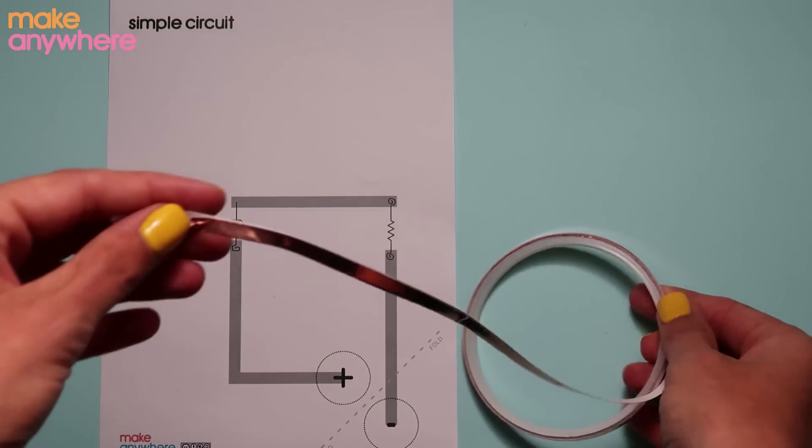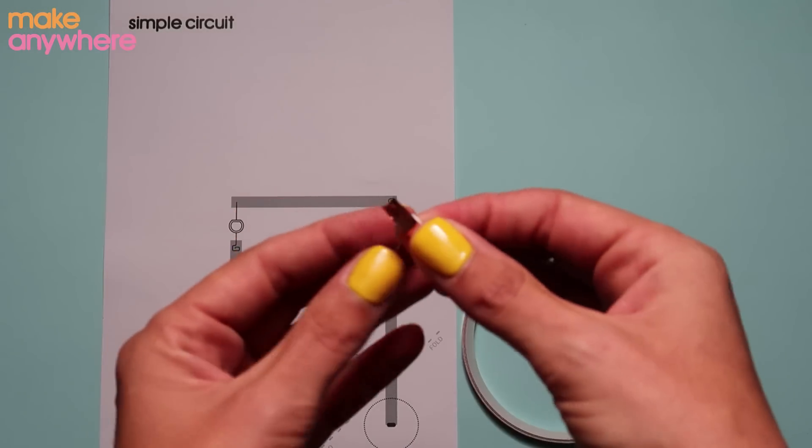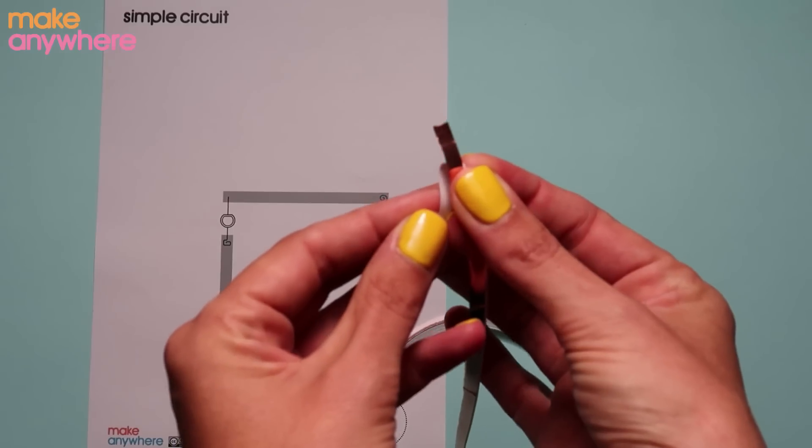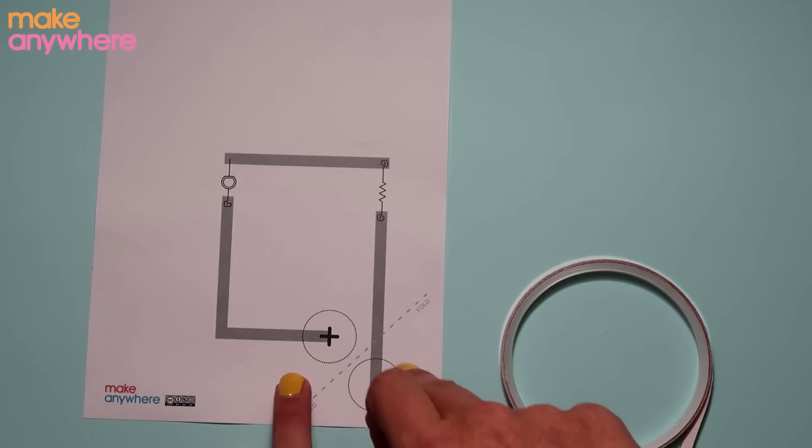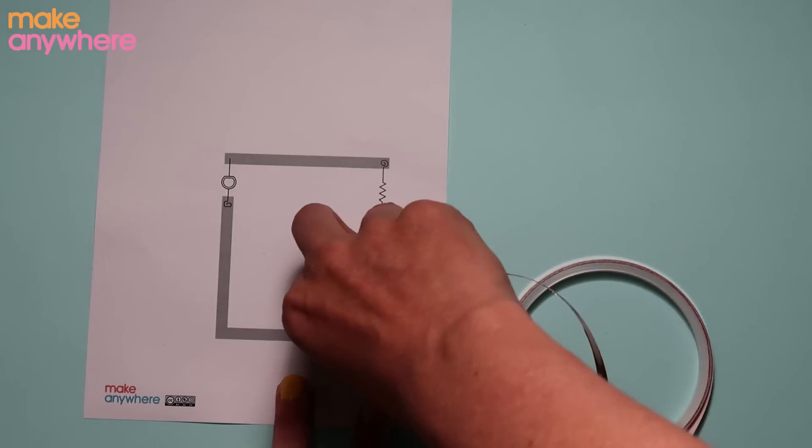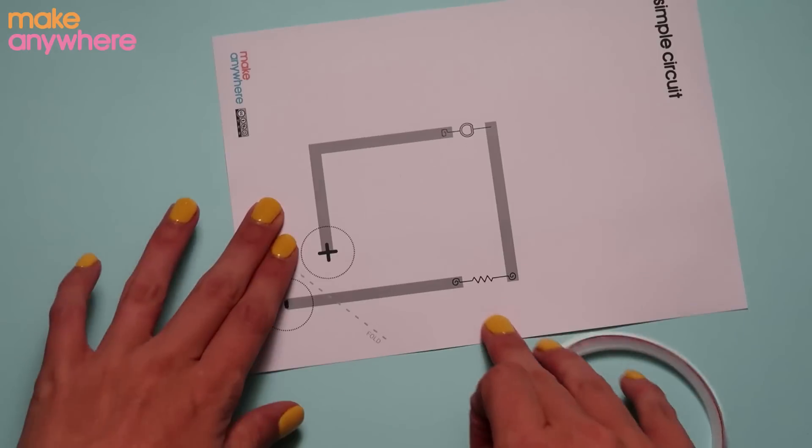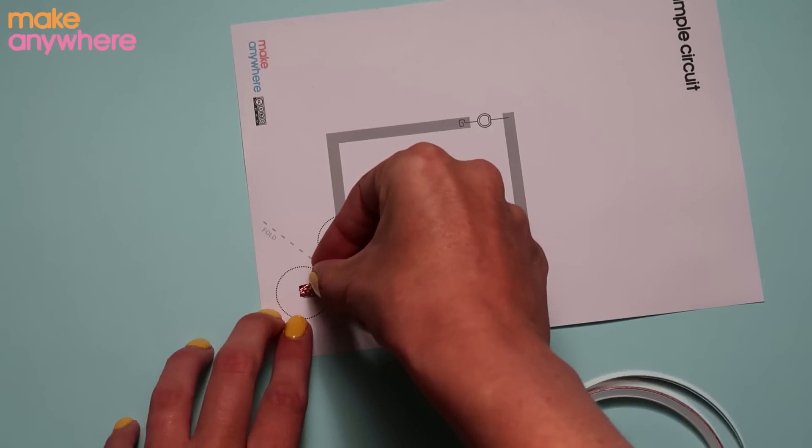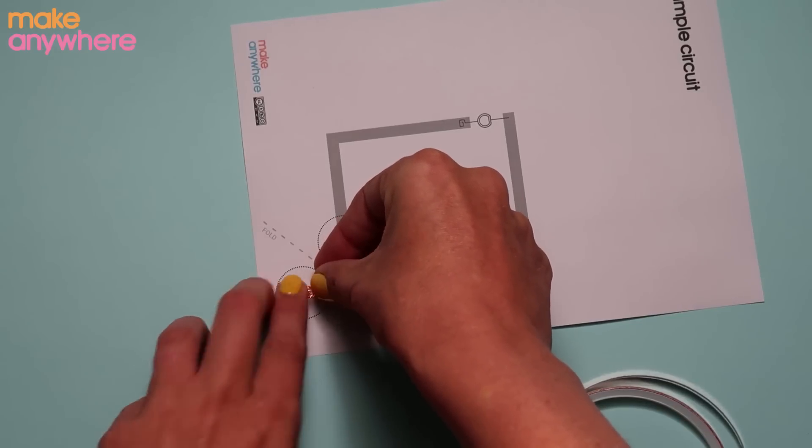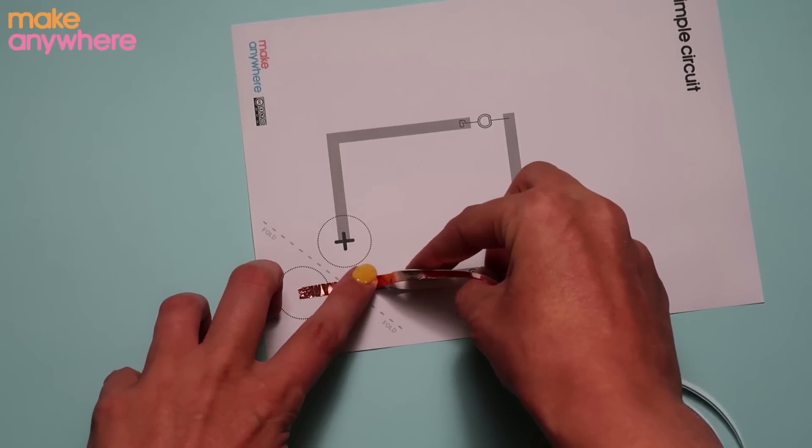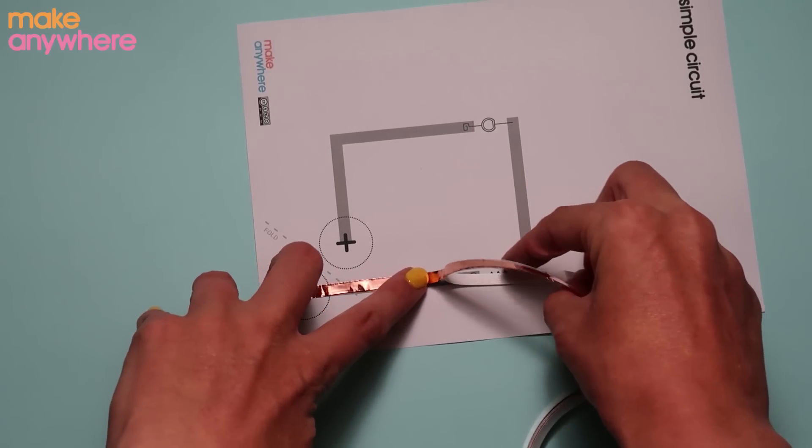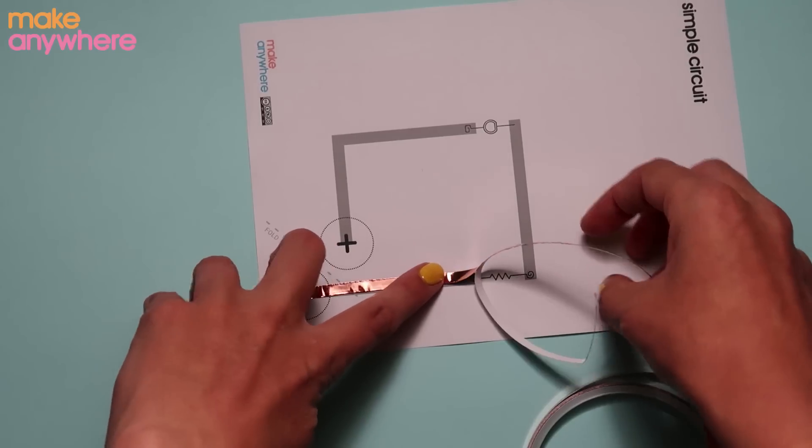Take your copper tape and peel back just a small section and fold the paper. I'm going to start in the middle of the negative circle. Following the grey line, we're going to push down and slowly peel back the paper till we get to the end of the grey line.